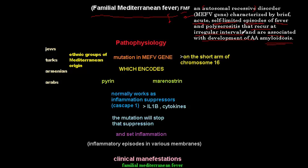To summarize, Familial Mediterranean Fever is an autosomal recessive disease with a genetic defect that leads to recurrent acute, self-limited attacks of fever and polyserositis. These attacks recur unpredictably, and the chronic complication of FMF is amyloidosis, which I'll explain in detail shortly. Now let's move to the pathophysiology of FMF.